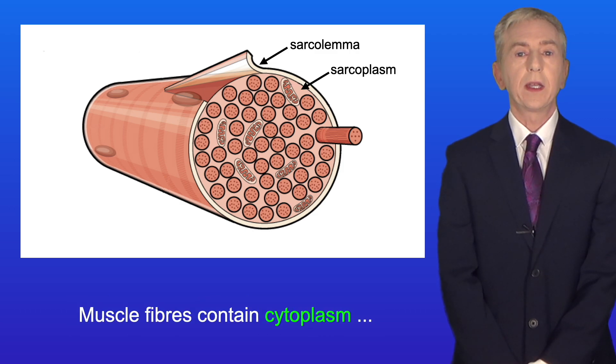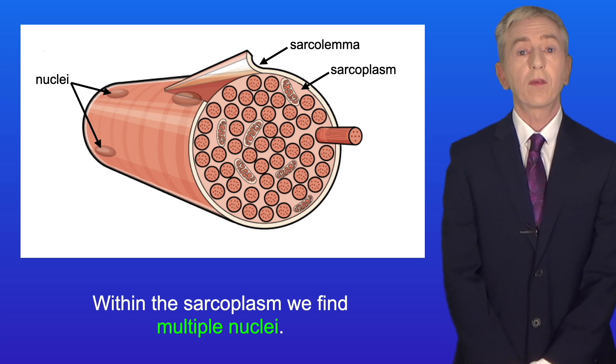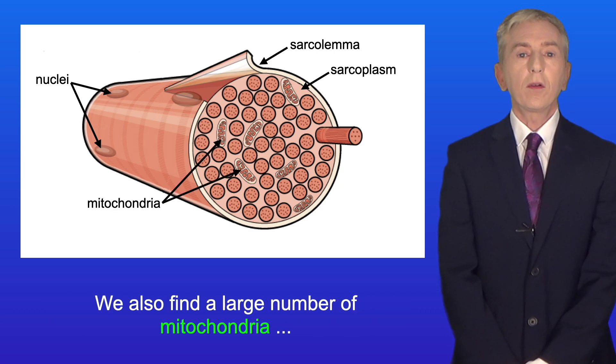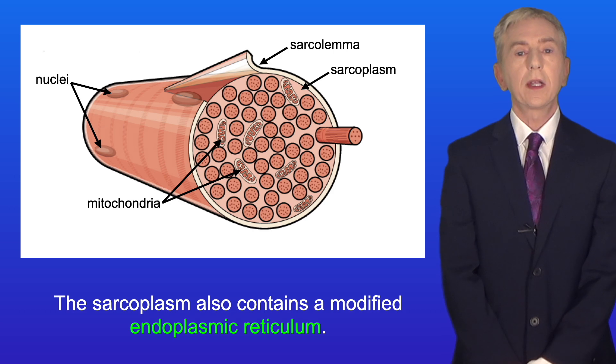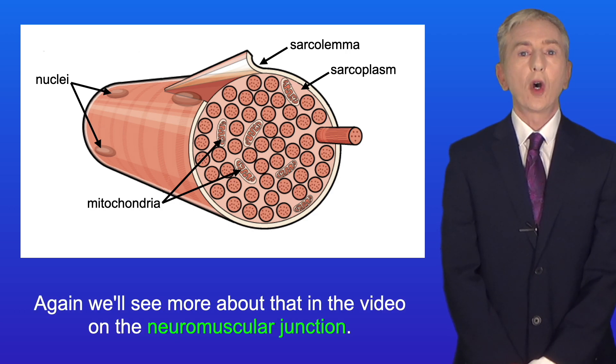Muscle fibers contain cytoplasm which is called the sarcoplasm and within the sarcoplasm we find multiple nuclei and that makes sense as the muscle fiber is formed from multiple cells fusing together. We also find a large number of mitochondria which provide the ATP needed for muscle contraction. The sarcoplasm also contains a modified endoplasmic reticulum. Scientists call this the sarcoplasmic reticulum and again we'll see more about that in the video on the neuromuscular junction.